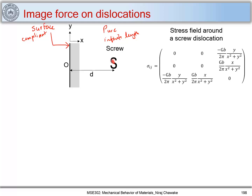Let's look at what is the stress field around this screw dislocation. We know the stress field around a screw dislocation — a screw dislocation has a stress field which doesn't have any normal components; it has only shear components. That means it doesn't have any hydrostatic components and has only deviatoric components of stress.